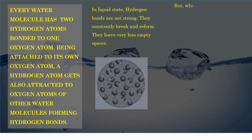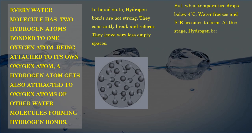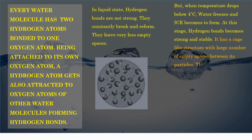But when temperature drops below 4 degrees Celsius, water freezes and ice begins to form. At this stage, hydrogen bonds become strong and stable. Ice has a cage-like structure with a large number of empty spaces between its particles. This empty space causes ice to be less dense than water.